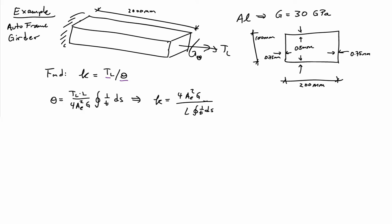So using that relationship, we have that the rotation is equal to the applied torque times the length, divided by 2AE squared, divided by the shear modulus, times the closed-loop integral of 1 over TDS.